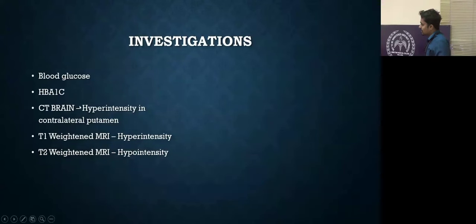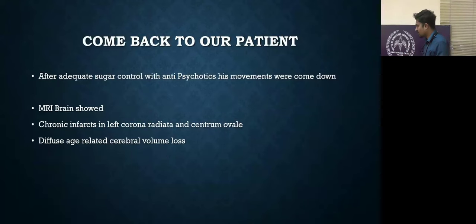Investigation mainly includes blood glucose levels, HbA1c, and CT brain where we may get hyperintensity in the contralateral side to the movements. T1-weighted MRI shows hyperintensity, and T2-weighted MRI shows hypointensity. These are all due to hyperperfusion and petechial hemorrhages. Why we are getting that hyperintensity? These petechial hemorrhages will not usually cause any weakness. We can get abnormalities in imaging or we cannot get them. It's all temporary, or we can get them after late imaging, seven to eight days, by repeating images.